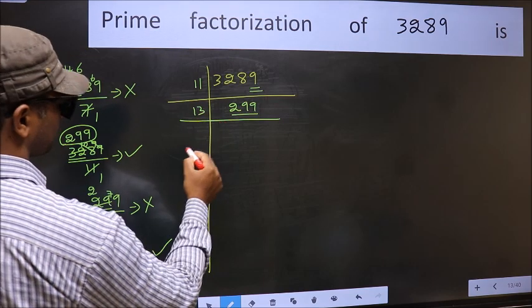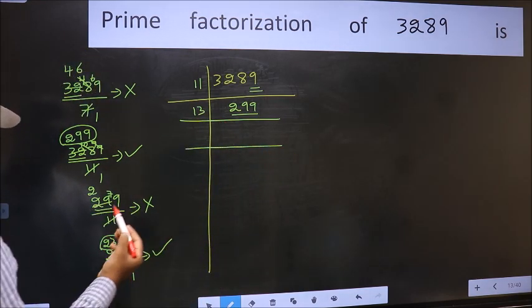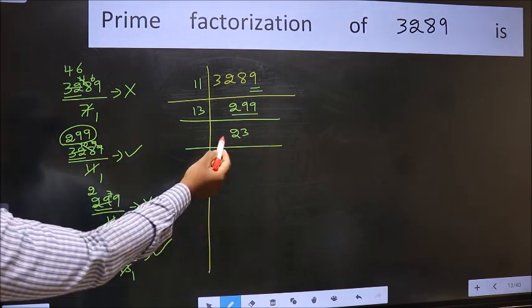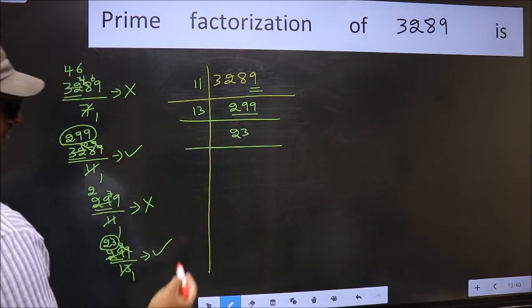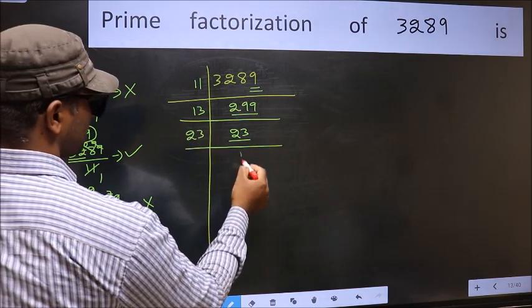So 13 here. And here we should write this number 23. Now we have 23. 23 is a prime number. So 23 times 1 is 23.